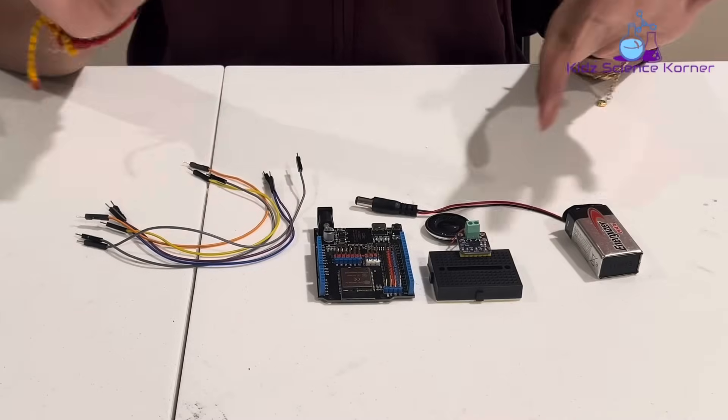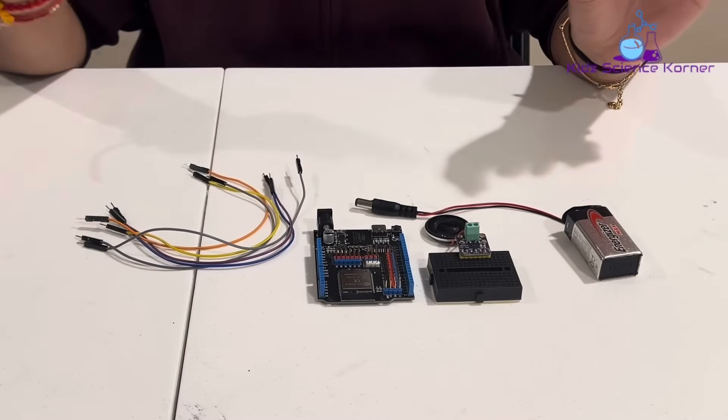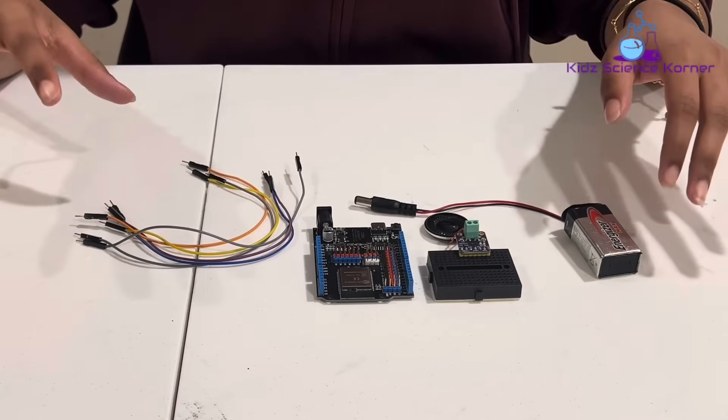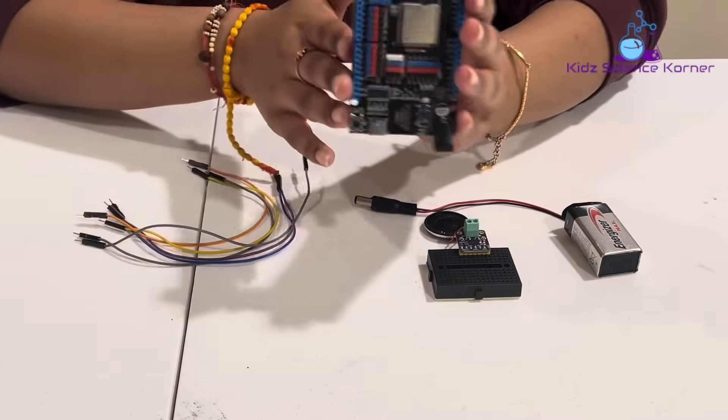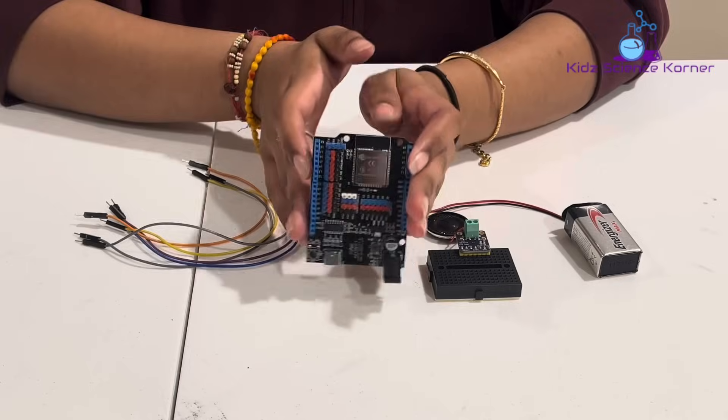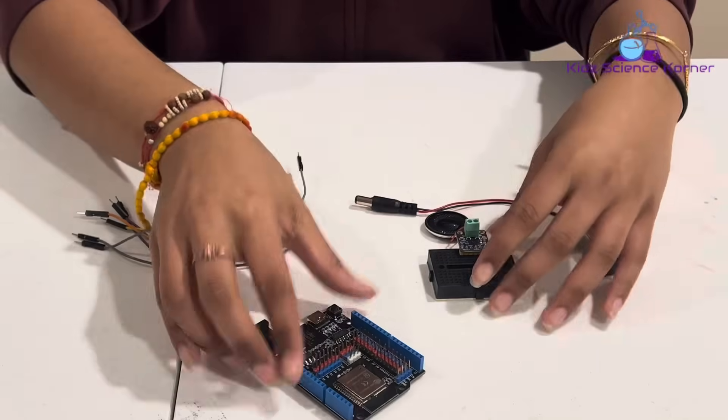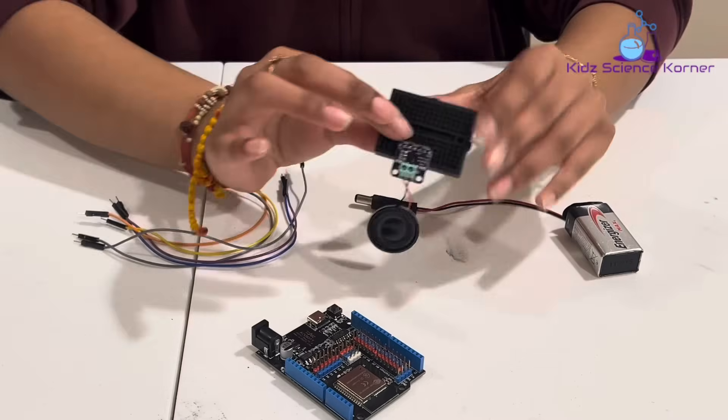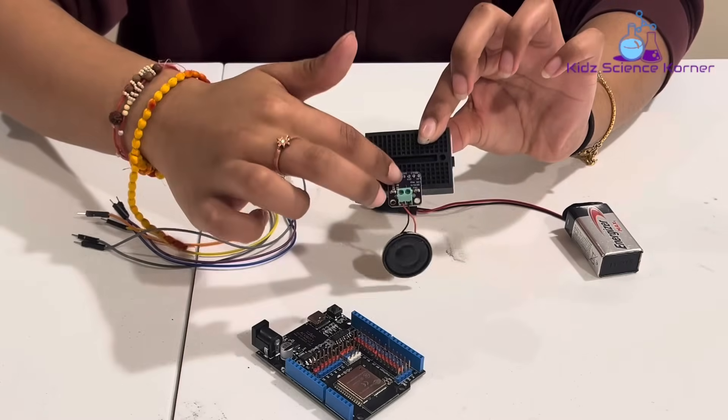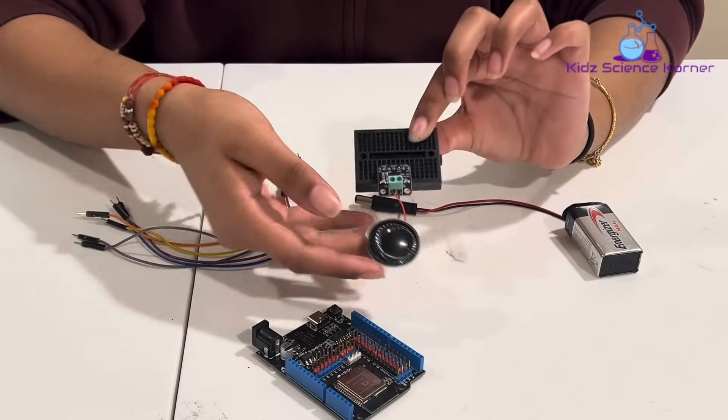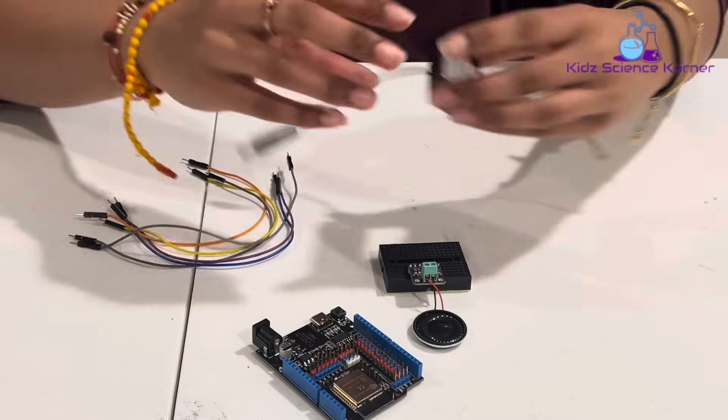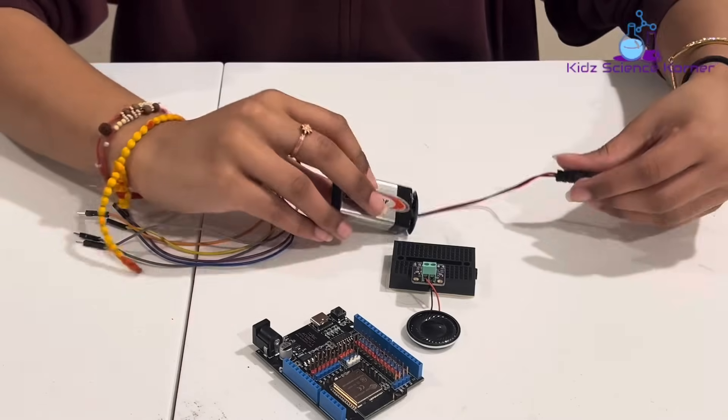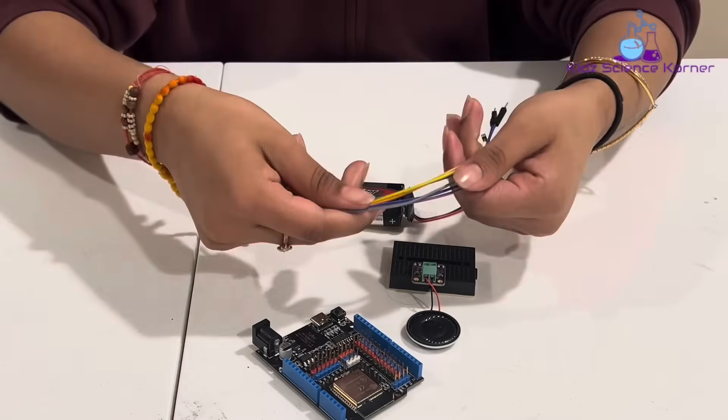All right, let's start actually building this project. So these are all the components that I talked about. We have an ESP32 development board. That's what it looks like. And then we have a breadboard with an amplifier and a speaker. We have our battery, and we also have some wires to connect.